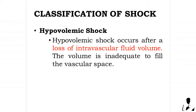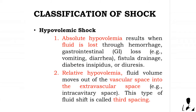Hypovolemic shock occurs after a loss of intravascular fluid volume that is inadequate to fill the vascular space. Absolute hypovolemia results when fluid is lost through hemorrhage, gastrointestinal loss — such as vomiting, diarrhea, fistula drainage — diabetes insipidus, or diuresis. Relative hypovolemia occurs when fluid moves out of the vascular space into the extravascular space, called third spacing.